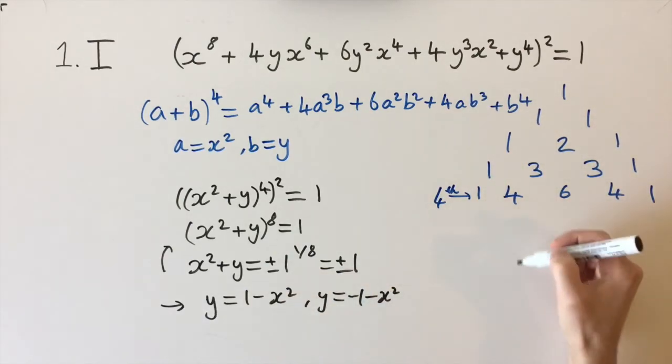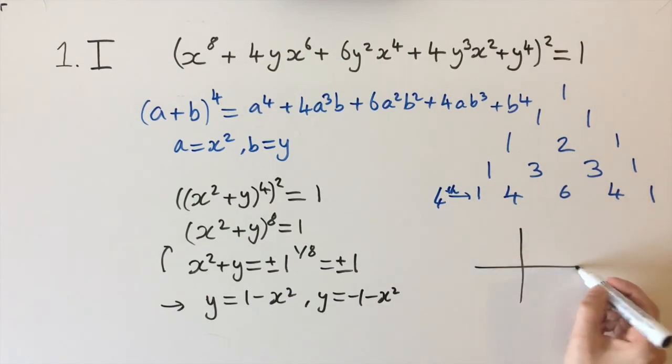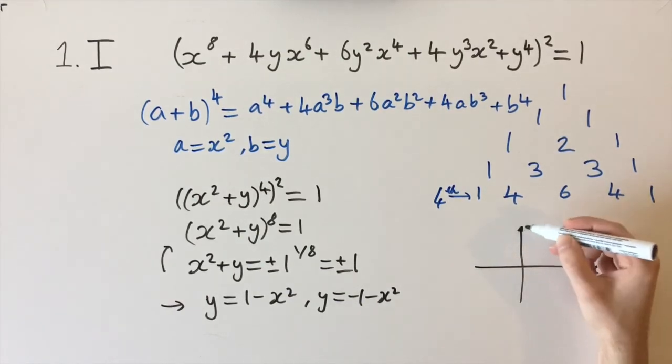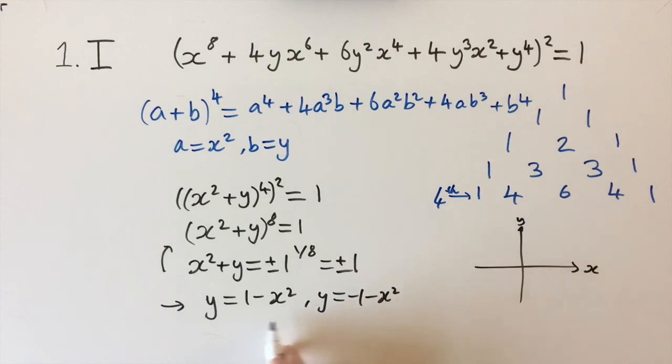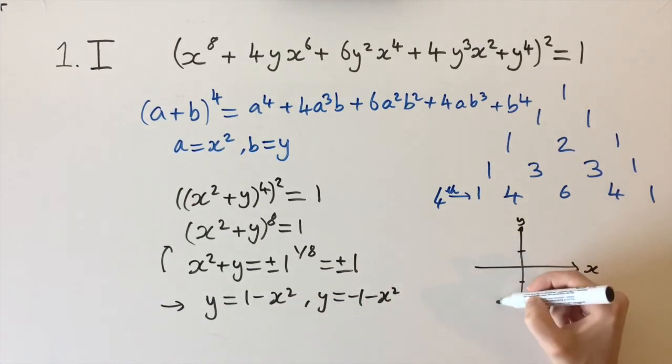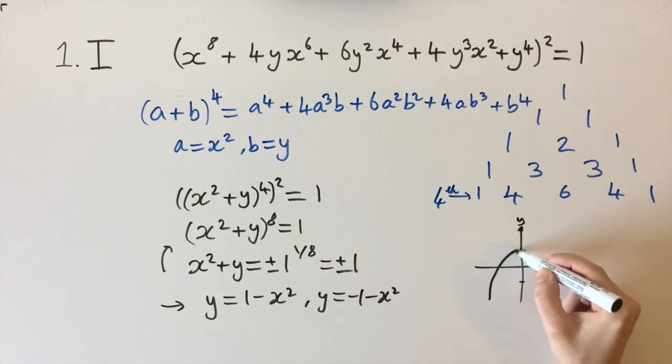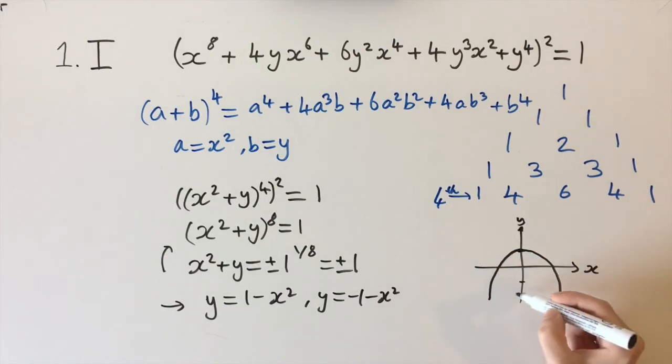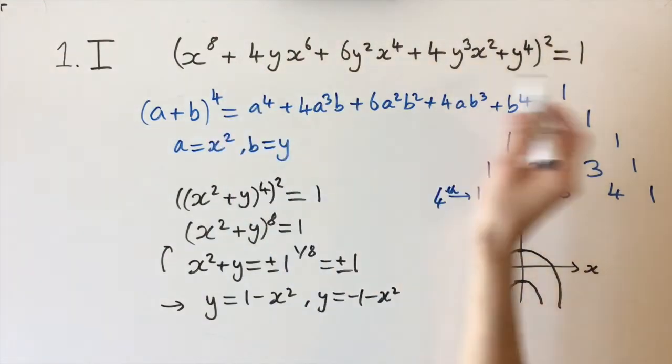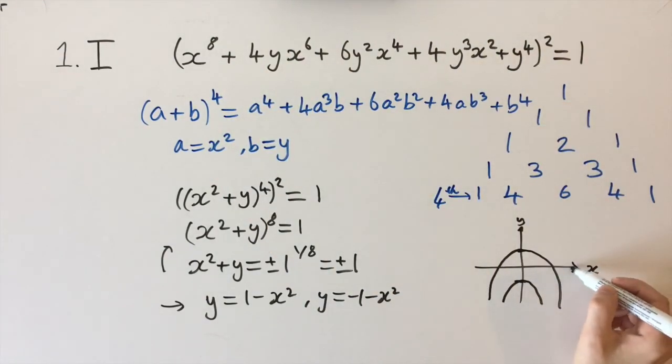Then we know how to sketch this. Let's draw the x-y plane, x here and y here. These are just two parabolas and they're going to intersect the y-axis at 1 and minus 1. Then we have minus x², so they're going to be inverted. They're going to look something like this, a very rough sketch. And that is how you sketch this horrible looking equation. This is what the end graph would look like.